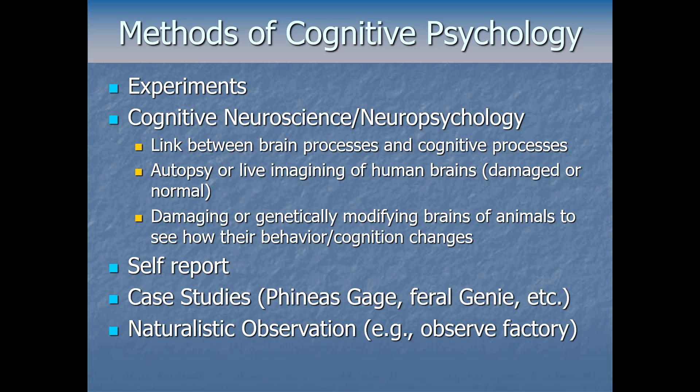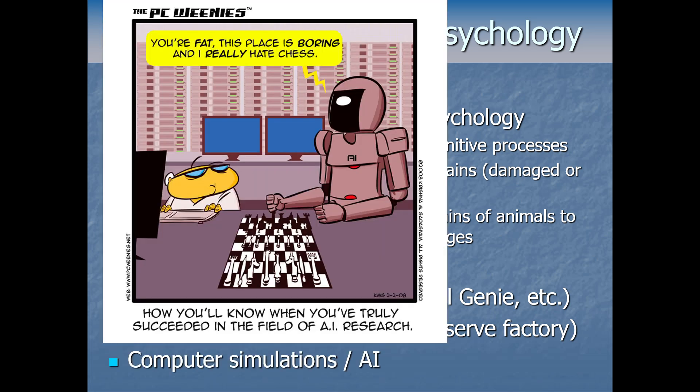Finally, some psychologists use computer simulations and computer modeling to answer cognitive questions, or maybe even study and develop computing systems themselves, like with artificial intelligence — cognition or cognitive-like processes in digital computers, perhaps to compare to humans. So these are many of the main methods used by cognitive psychologists — not all of them, but a lot of them.